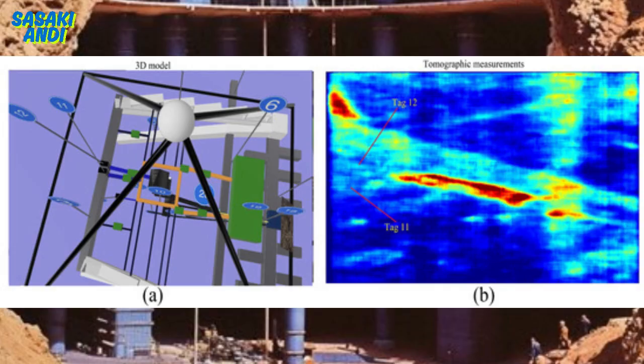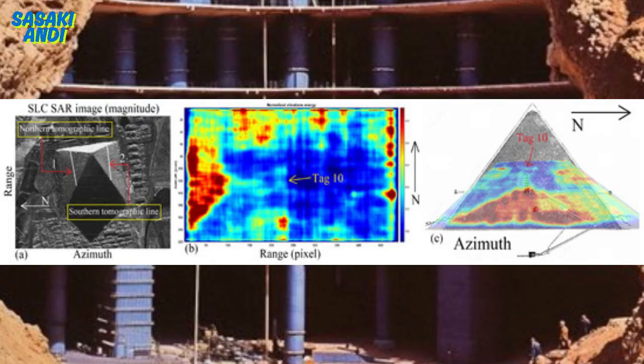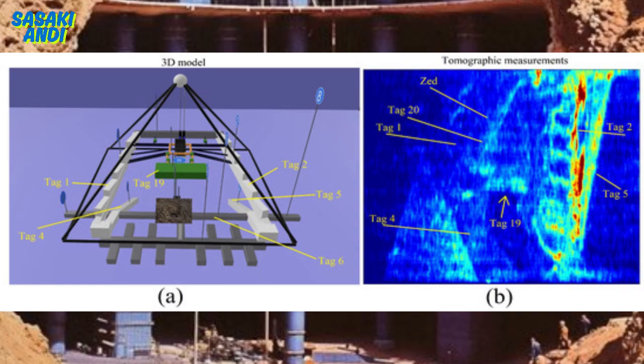As for the big void, tag 19, this one's situated above the Grand Gallery and is shaped kind of like a rectangular box. What's really intriguing is that it appears to be connected to that Zed complex structure, tag 10, through two sloping corridors, tag 20. A massive void connected to the Zed structure? That's a huge discovery. Do we have any idea what the purpose of these voids might be? Unfortunately not, but it just adds another layer of mystery to the already enigmatic Great Pyramid.